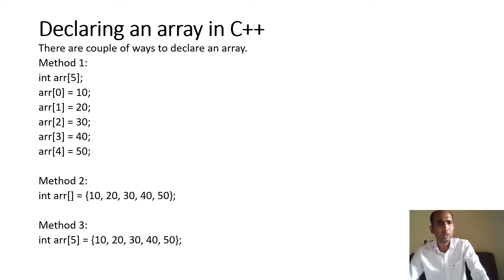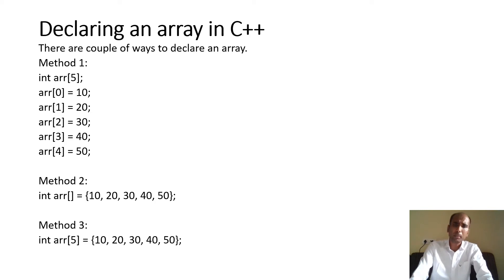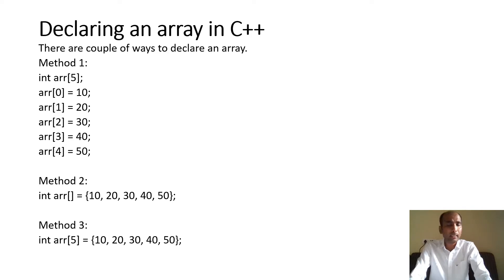Another way to initialize values is method 2. Here, I have not specified the size because I initialized the values at the time of declaration of the array. If you initialize values at the time of declaration, it is not mandatory to specify the size. In method 3, you can also define the size and then initialize the values 10 to 50. You can use whichever method you prefer.